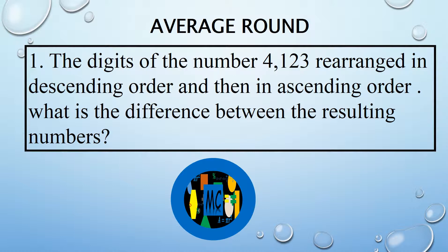The digits of the number 4123 are rearranged in descending order, and then in ascending order. What is the difference between the resulting numbers?